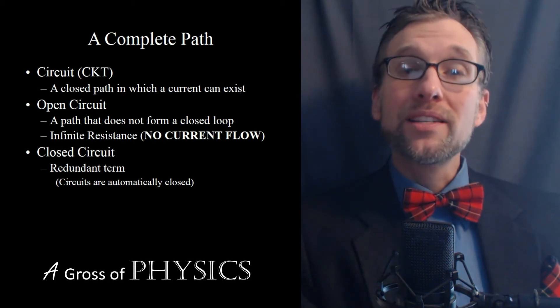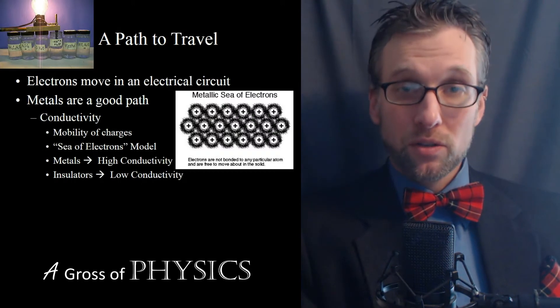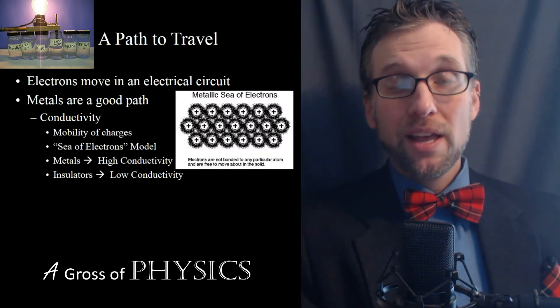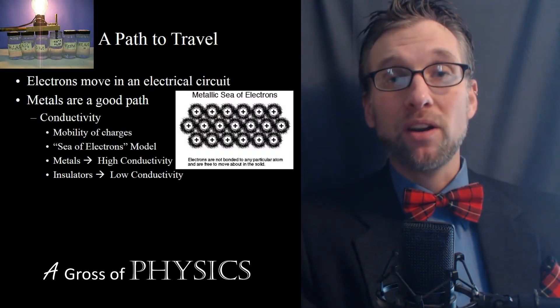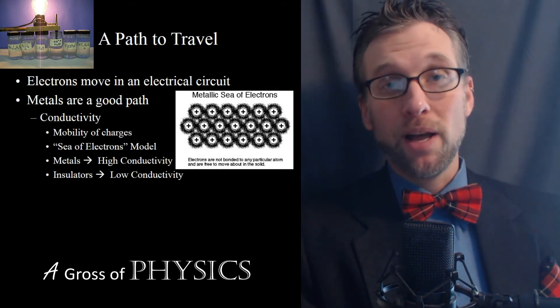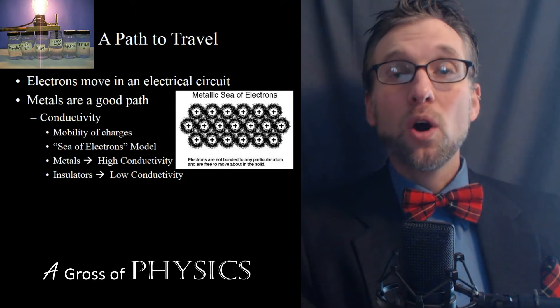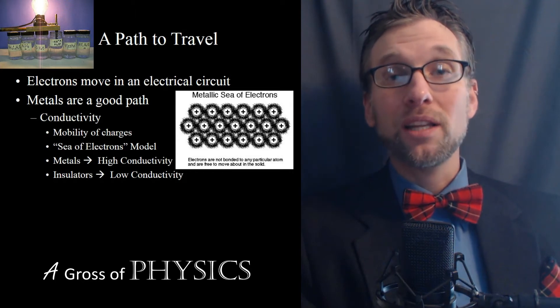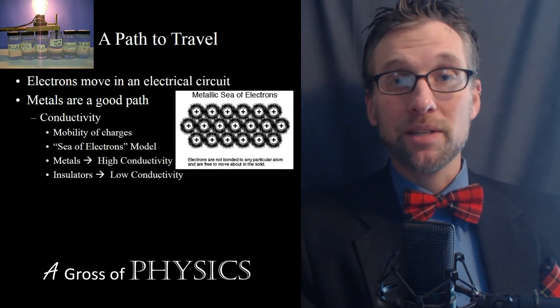Now the second thing we need is a path for the electrons to travel, and typically we have that path as a metal conductor. In chemistry, you learned about the sea of electron model and how in metals all the valence electrons are held weakly by the atom itself.